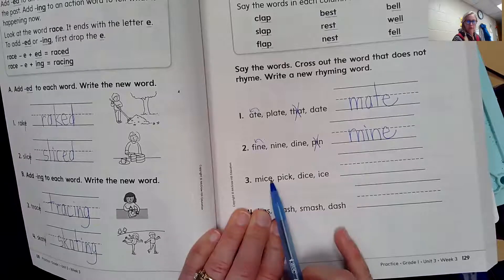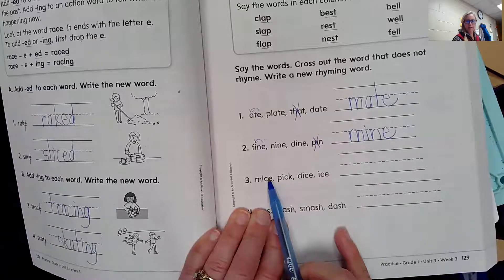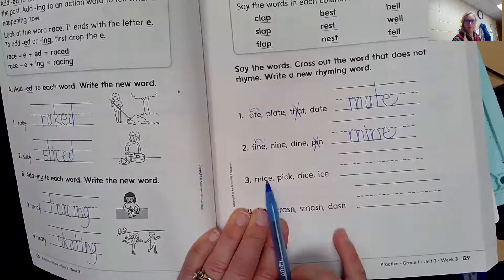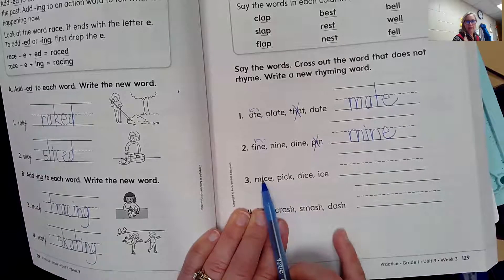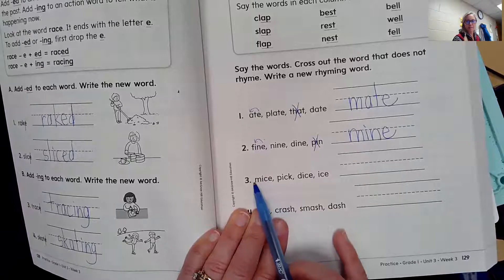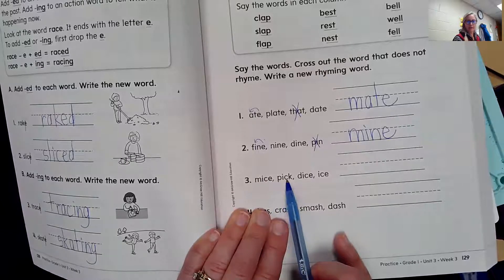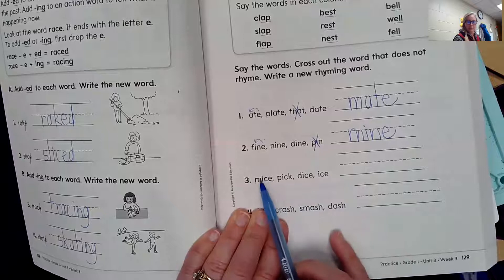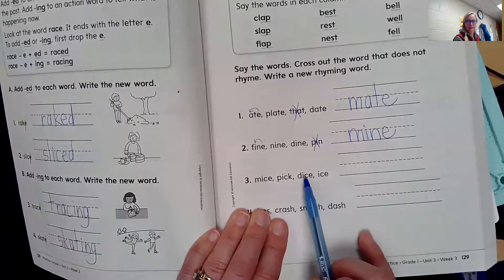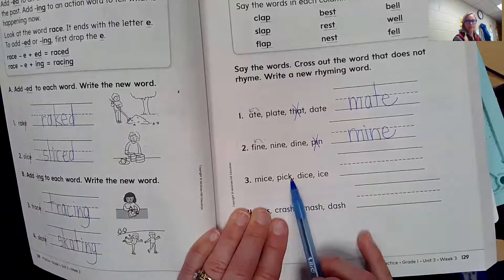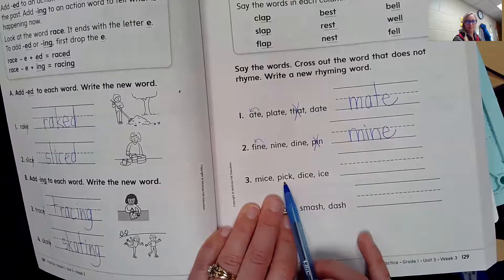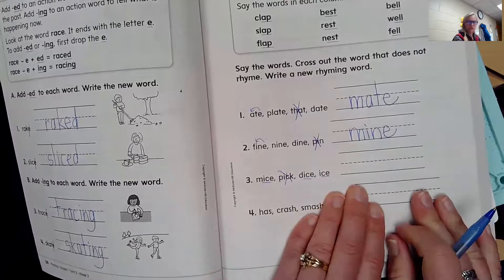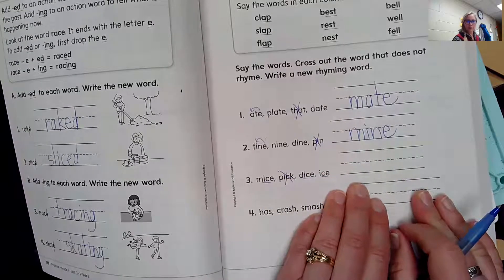Let's look down here. Now let's take a look here. We've got an E after the C. When we have an E after the C, it makes the soft sound 'ss'. And we have a silent E at the end, it makes the I say I. So we've got the word mice. Mice, pick, dice, ice. Pick doesn't rhyme. It doesn't have the same sound at the end. These all end with 'ice'. So pick does not rhyme.